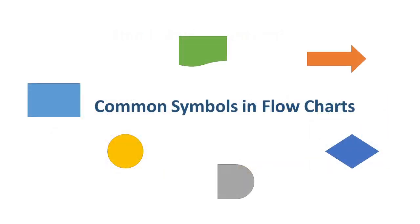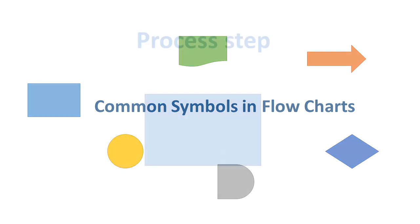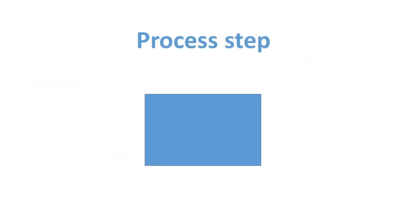Now that we have looked at the five key steps in drawing a flowchart, let us move on to some common symbols used in drawing these charts. Whether you choose to use these symbols or not is up to you and your improvement team. A rectangle shows one step in the process. The step is written inside the box. Usually only one arrow leads out of the box.